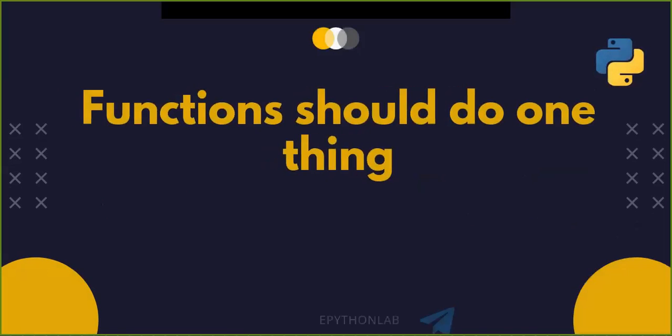Another important tip is: functions should do one thing, not many things. When you create a function, that function should be focused on doing one thing. If a function is doing multiple things, it becomes more difficult to generalize and reuse — it's difficult to know which part of the function you want to reuse.